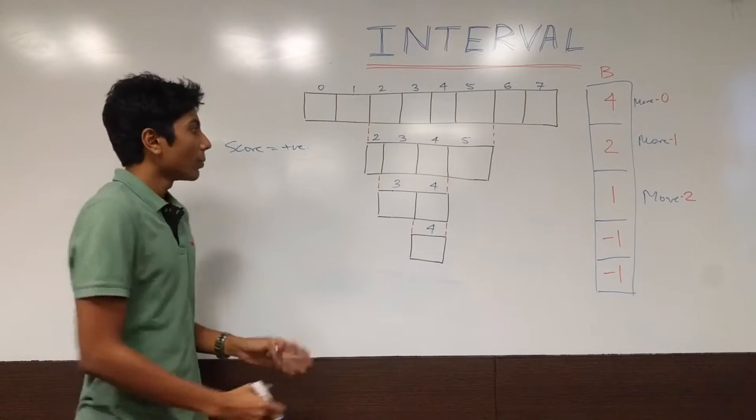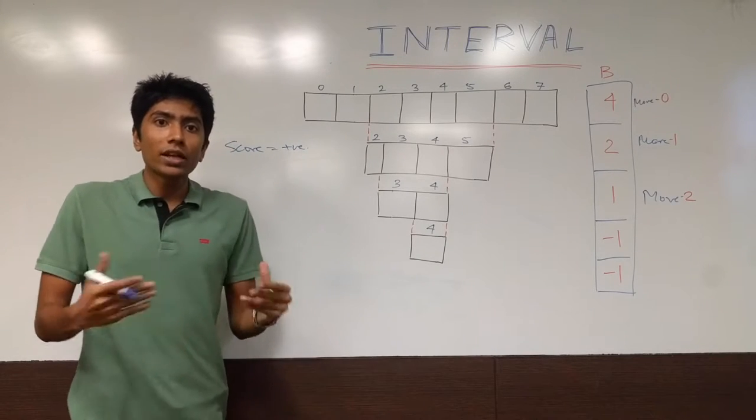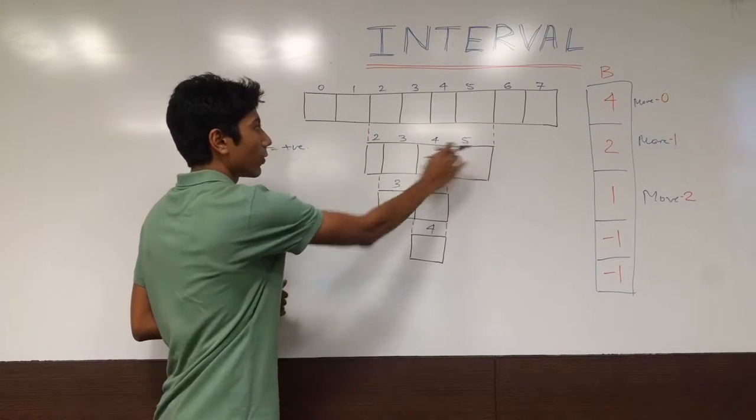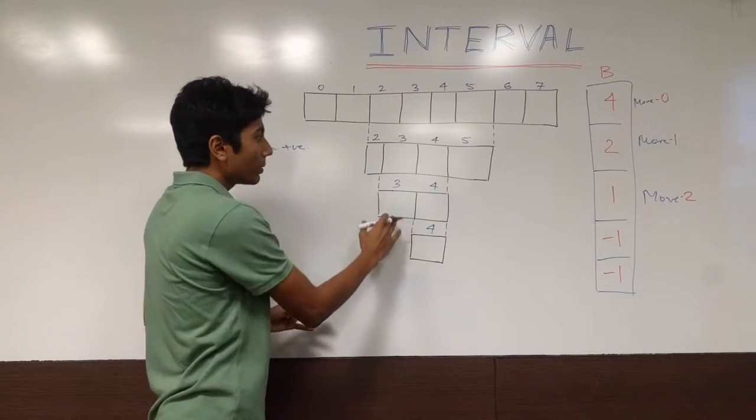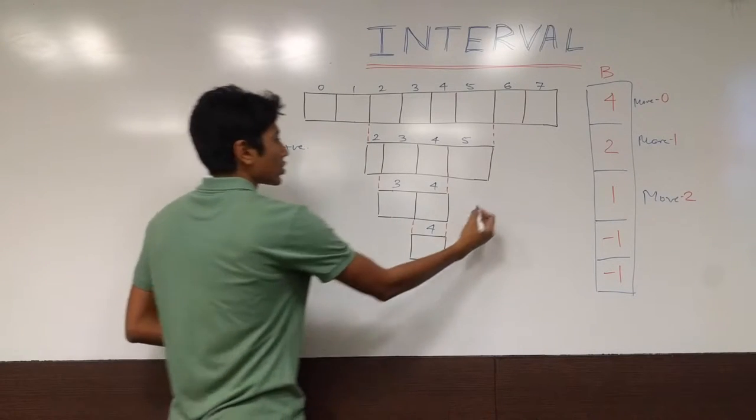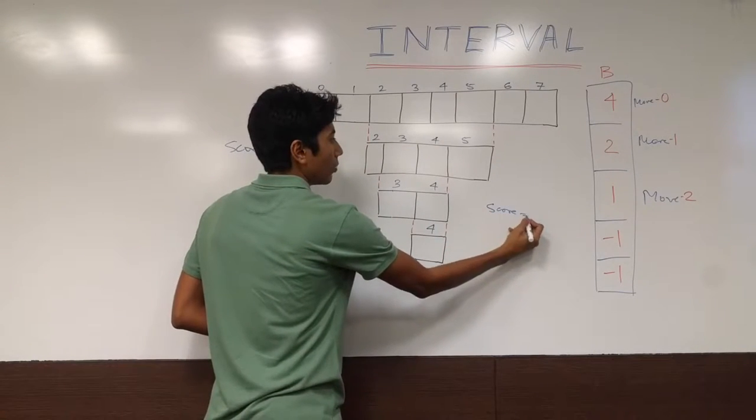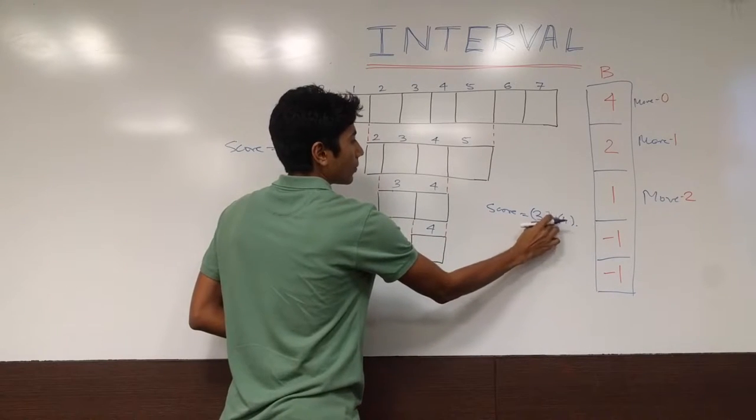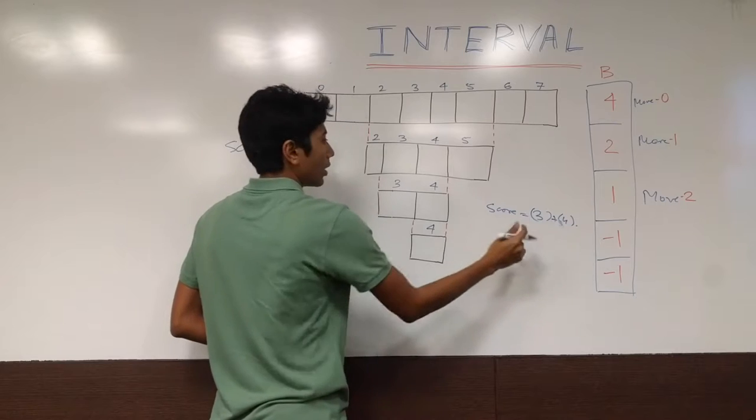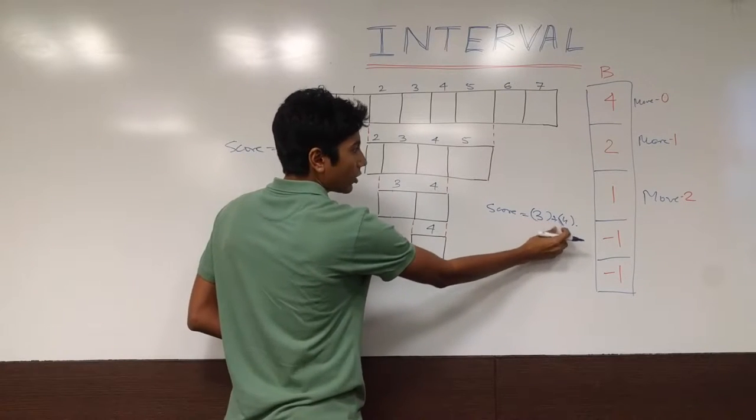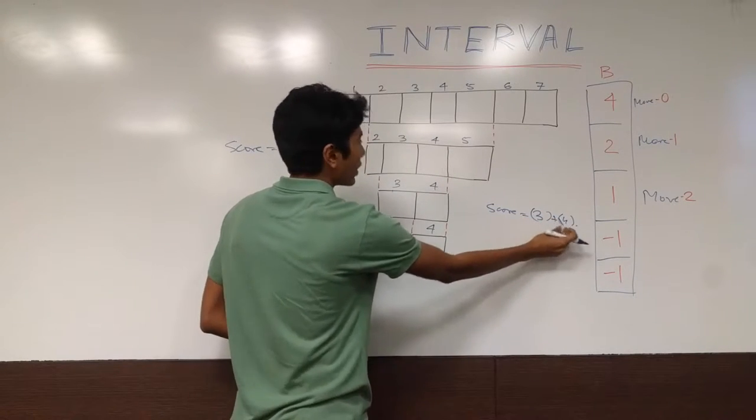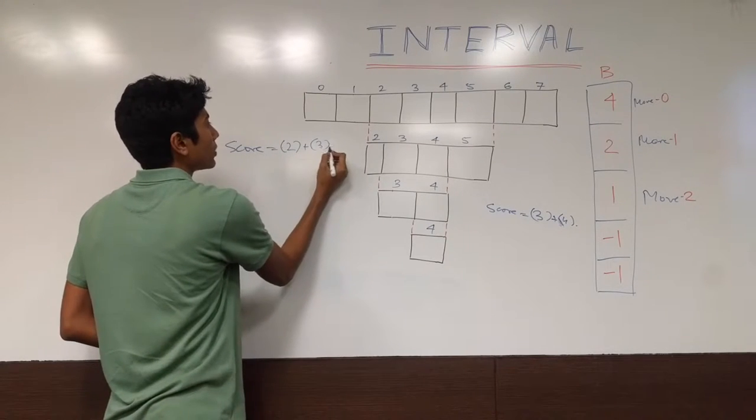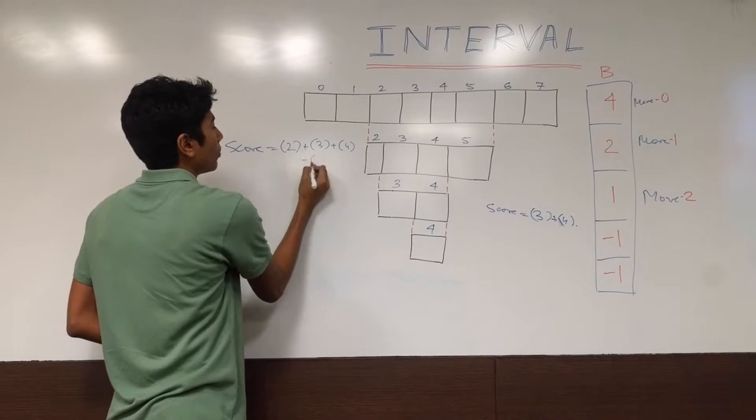Your opponent does the same thing but in a sub-range of the range you have chosen. So you chose from 2 to 5, you got the score of all elements from 2 to 5. Your opponent plays 3 to 4 and they get a score. Player 2 gets a score from 3 to 4, so 3 plus 4. This is the value of the elements at position 3 and 4 and this is value of 2 plus value of 3 plus value of 4 plus value of 5.